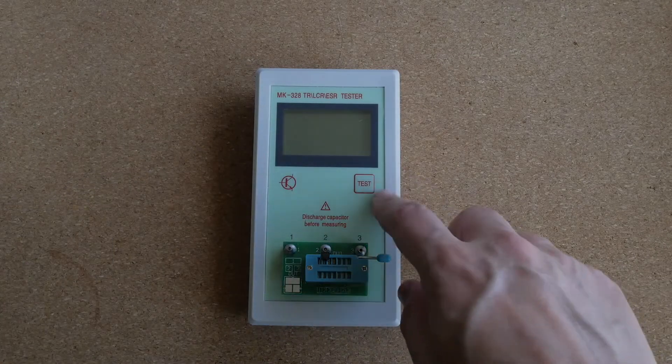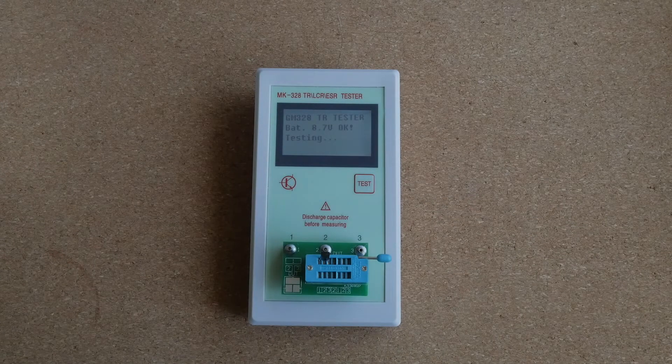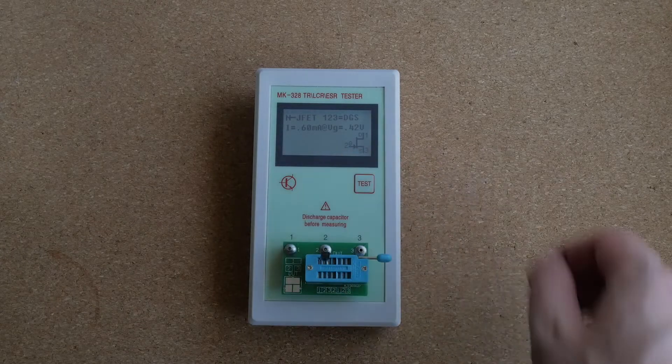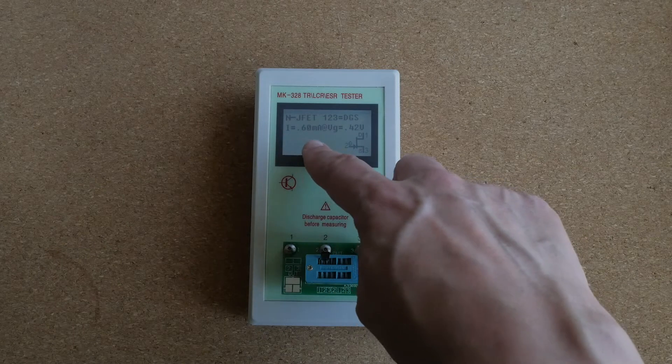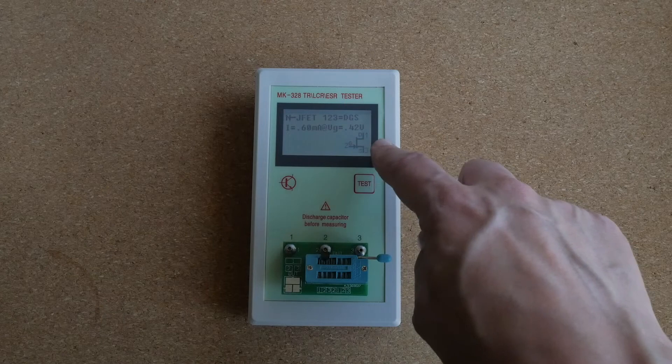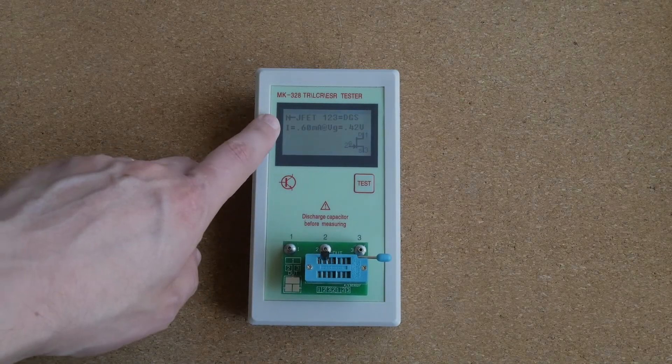Finally let's test it with a JFET. This is a Toshiba 2SK170. As you can see it shows the pinout. It shows that the source to drain current is 0.6 milliamps at gate voltage 0.42 volts. It correctly detected that this is an N-channel JFET.